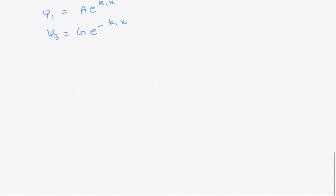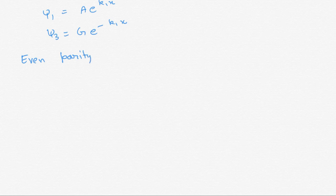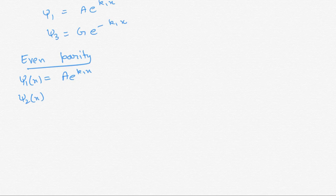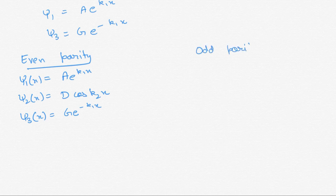Since the potential V(x) is symmetric, ψ must have definite parity. We have two types of states: even parity and odd parity. For the even parity wave function: ψ₁(x) = A·e^(k₁x), ψ₂(x) = D·cos(k₂x), and ψ₃(x) = G·e^(−k₁x). For the odd parity wave function: ψ₁(x) is the same form, ψ₂(x) = C·sin(k₂x), and ψ₃(x) has the corresponding form.